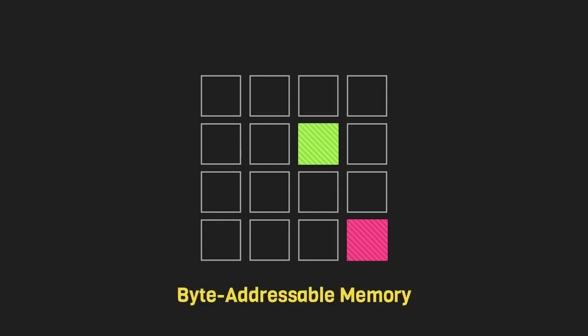We'll start by considering a 16-byte memory and data is going to be stored in these bytes. Now, we need a way of saying, get me the data stored here or store this data here. That's going to be achieved by identifying each of these bytes by a special number called an address. This type of memory, where each of the bytes is going to be given a unique address, is called a byte addressable memory.